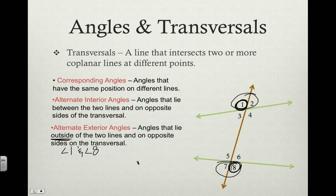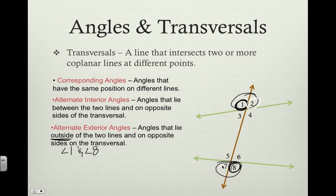We also have angle two and angle seven — that would be our other pair of alternate exterior angles. They lie on the outside of the two lines and they are on opposite sides. They both have to be on the outside and cannot be on the same line.